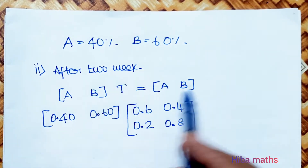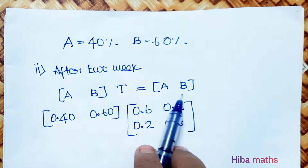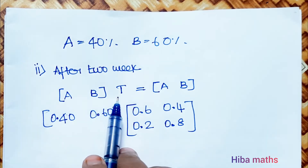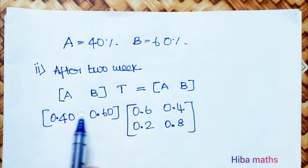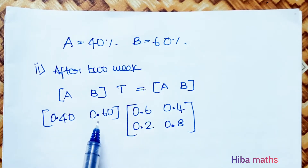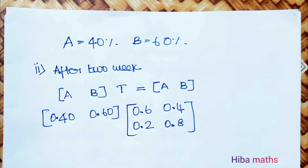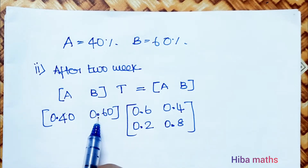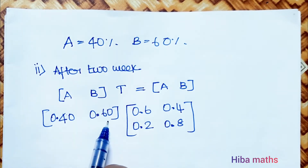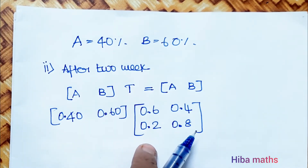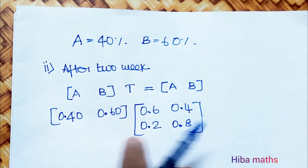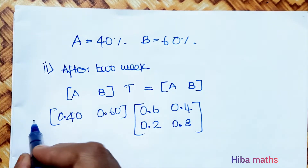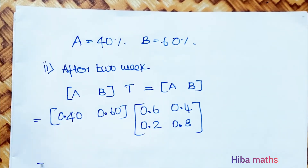After two weeks, we apply the formula again: [A, B] × Transition Matrix = [A, B]. Now the previous week's shares are A = 0.40 and B = 0.60. We multiply [0.40, 0.60] by the transition matrix.